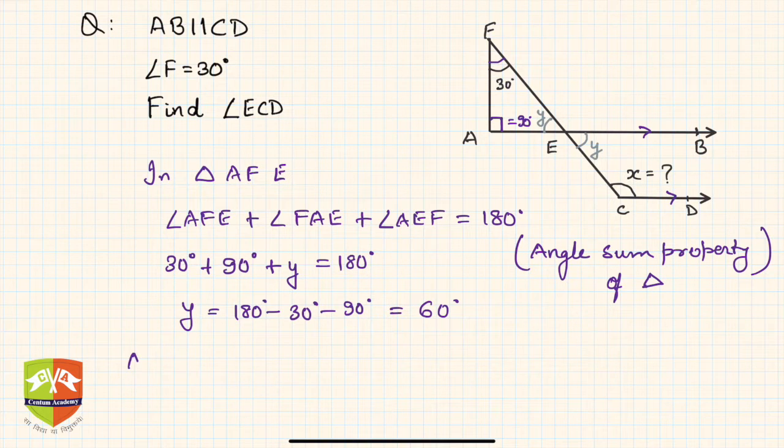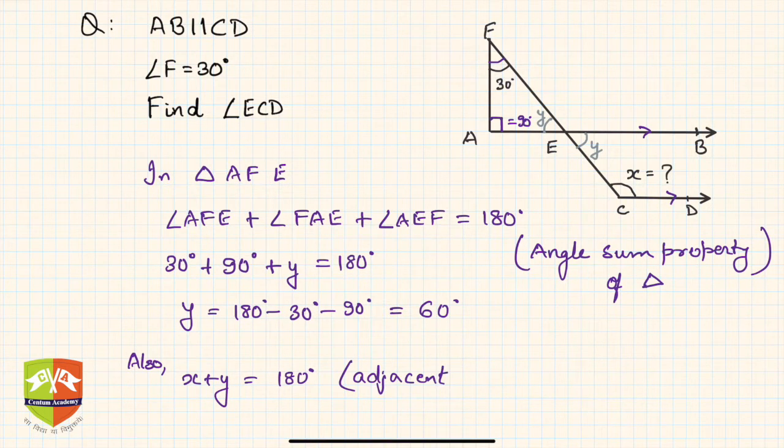So y equals 60 degrees. Also, x plus y equals 180 degrees. Why? Because adjacent angles are always supplementary in the case of parallel lines and a transversal cutting them.